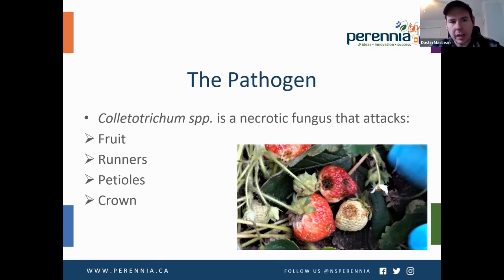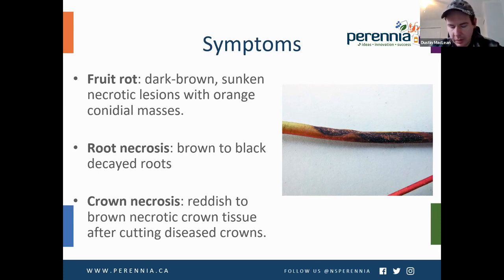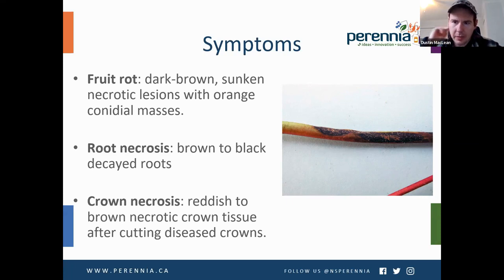It's a necrotic fungus and attacks fruit, runners, petioles, and crowns. Infections can occur on green or ripe fruit and present as brown or black sunken circular lesions. These lesions are distinct and fairly small — no larger than about one and a half centimeters in diameter. Salmon-colored spore masses ooze from these lesions in humid conditions. That's a really good indicator of anthracnose on fruit. A lot of times it's confused with Botrytis cinerea — with Botrytis, it's more of a grayish green, whereas the salmon color indicates anthracnose.